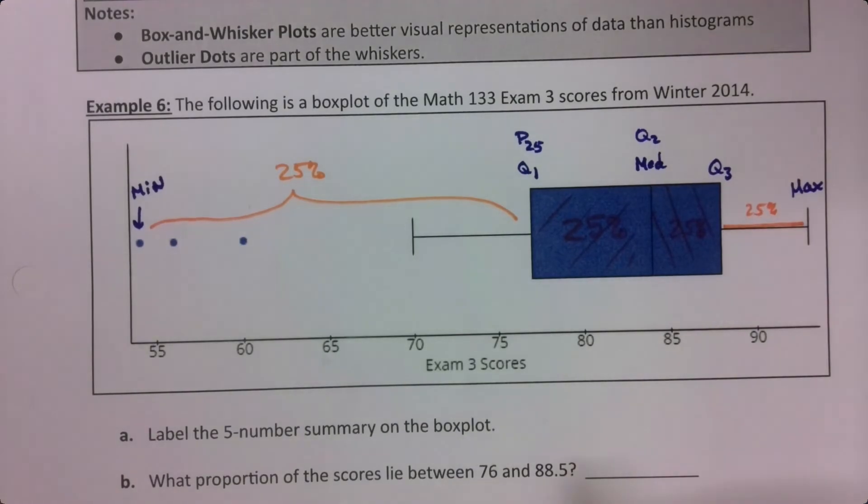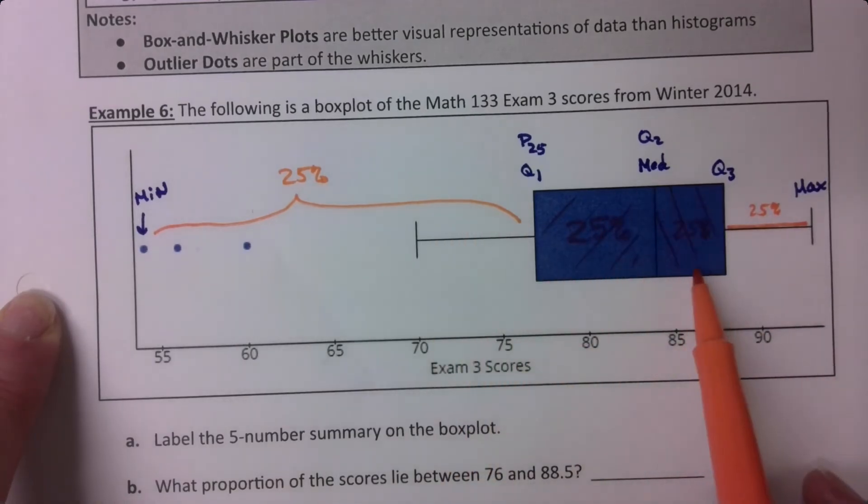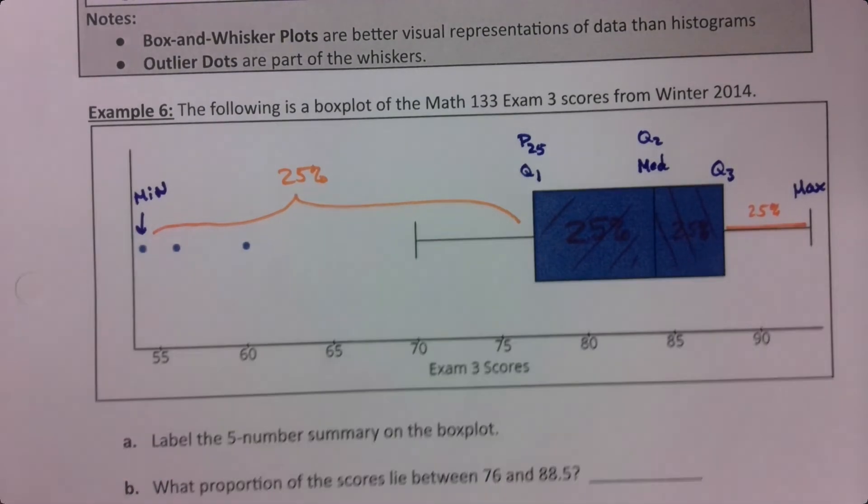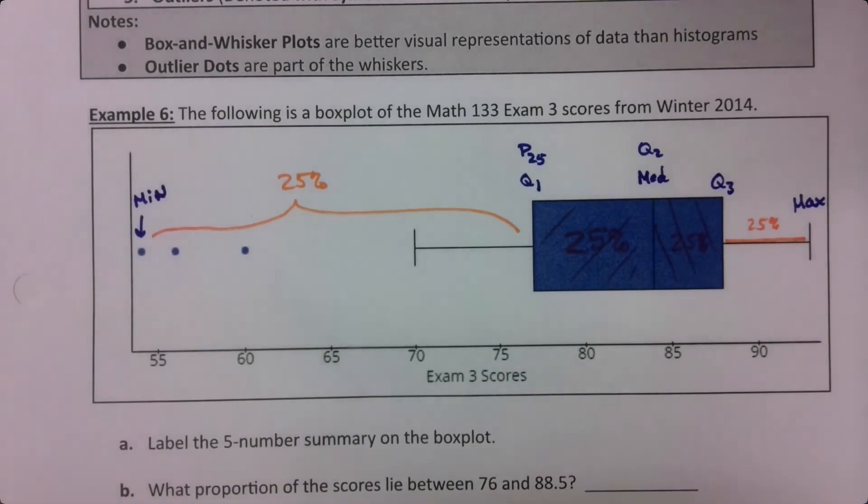Each of those sections—this left whisker has 25%, this left box has 25%, the right box has 25%, and the right whisker also has 25%—hence it's often called a box and whisker plot. Now we know these values because we calculated them already. We found them in a previous example. I can flip back a couple pages to find them.